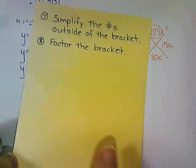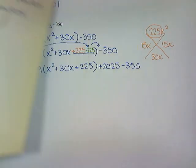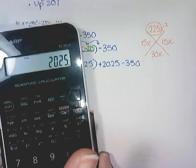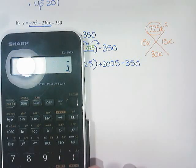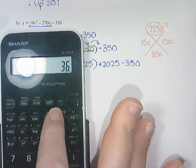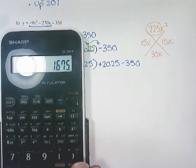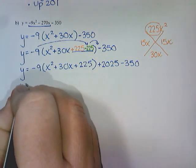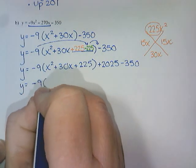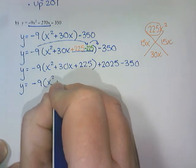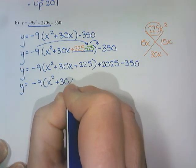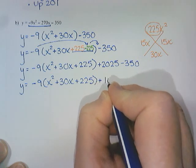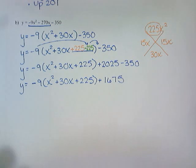On the other side of my card it says simplify the numbers outside of the bracket. So 2,025 take away 350 is 1,675.